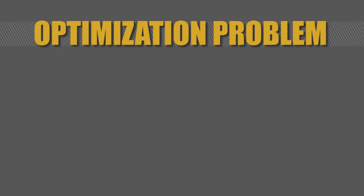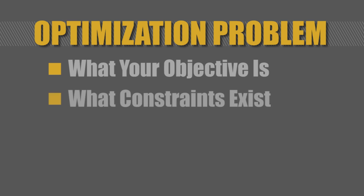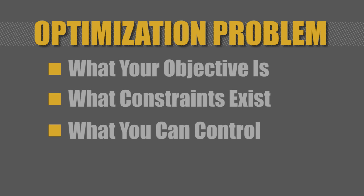You're basically modeling problems to optimize. You have to decide what things you can change to make things better. For any optimization problem, you have to decide what your objective is, what constraints you're operating in, and what are the things you can control.